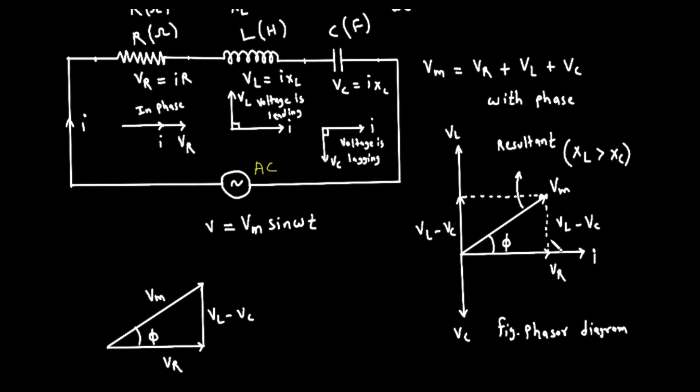The inductor's voltage, V sub L, leads the current by 90 degrees. So, we draw its phasor pointing straight up. The capacitor's voltage, V sub C, lags the current by 90 degrees. So, we draw its phasor pointing straight down.